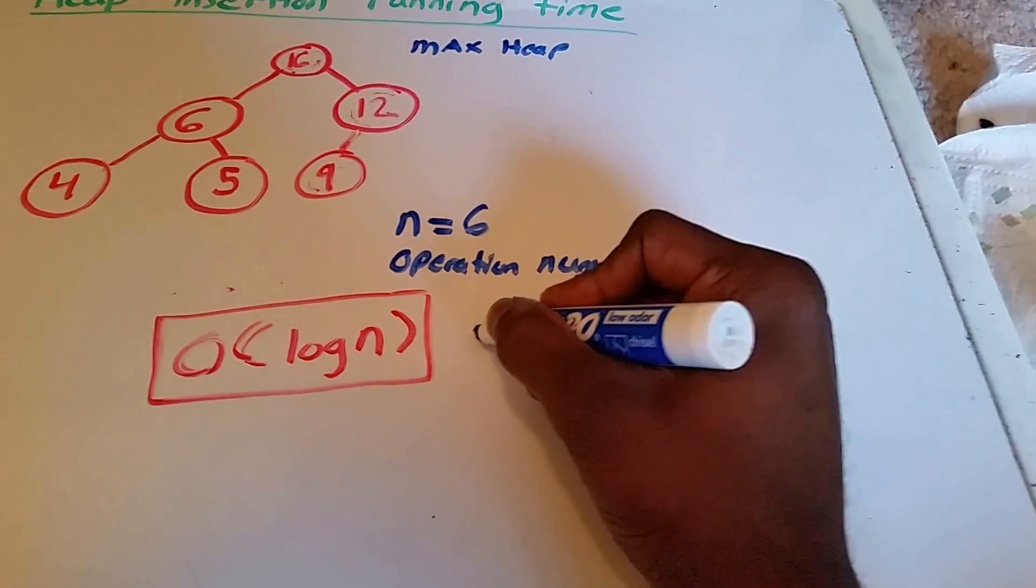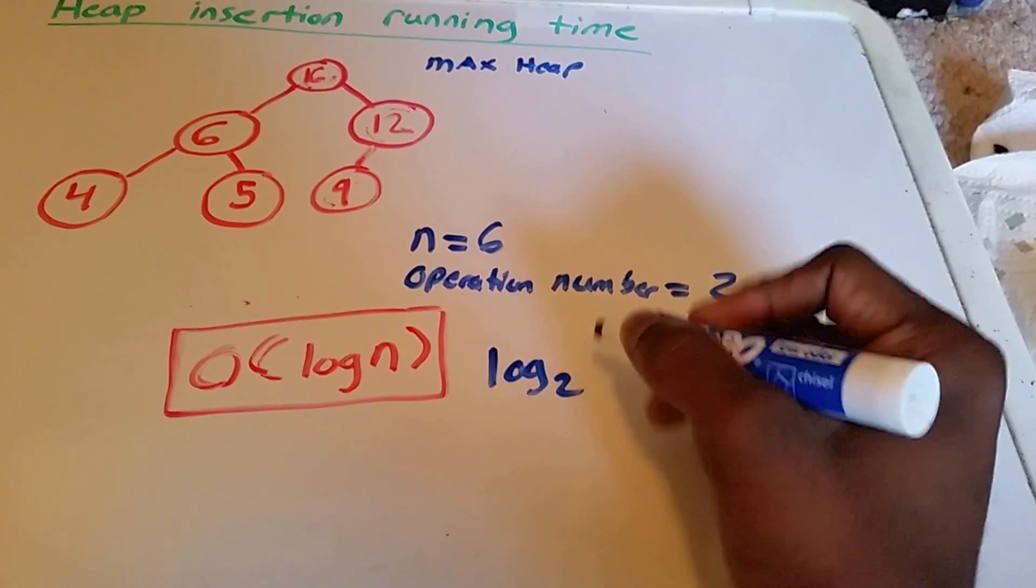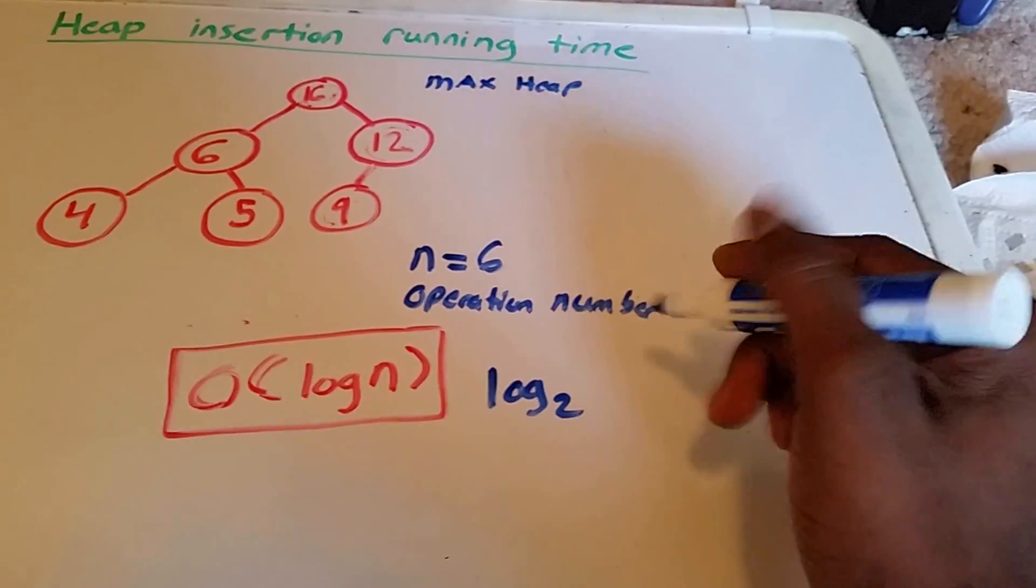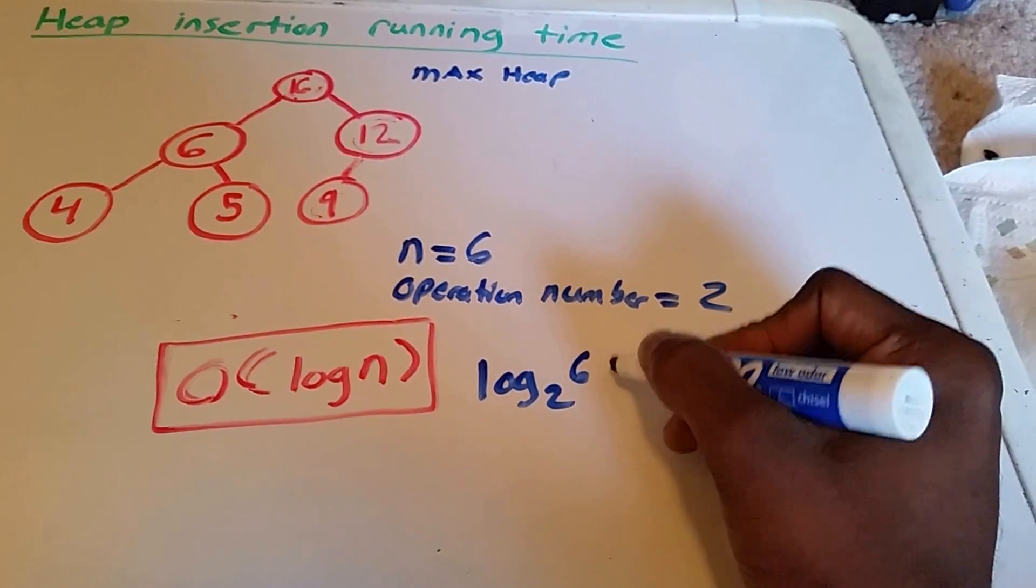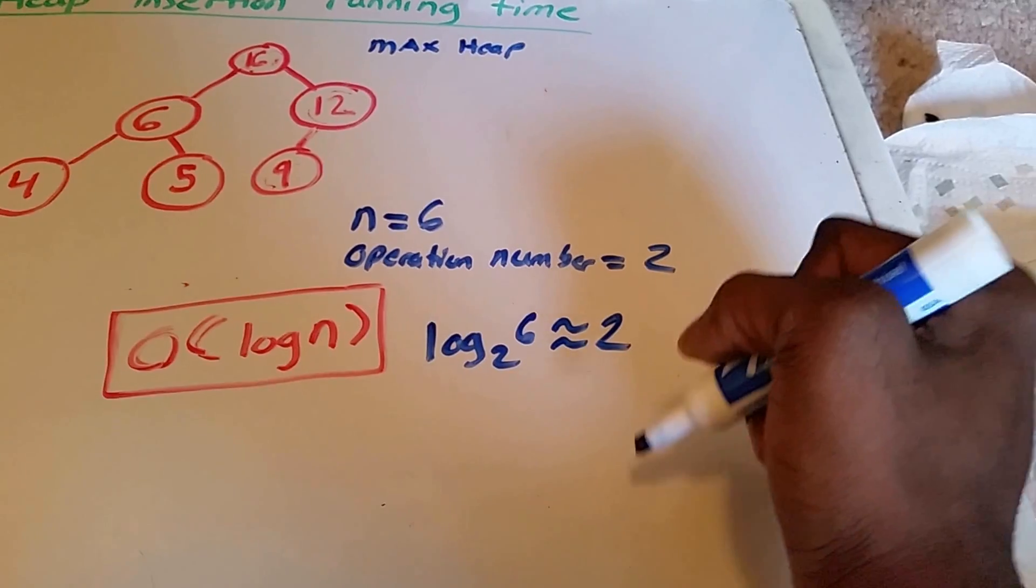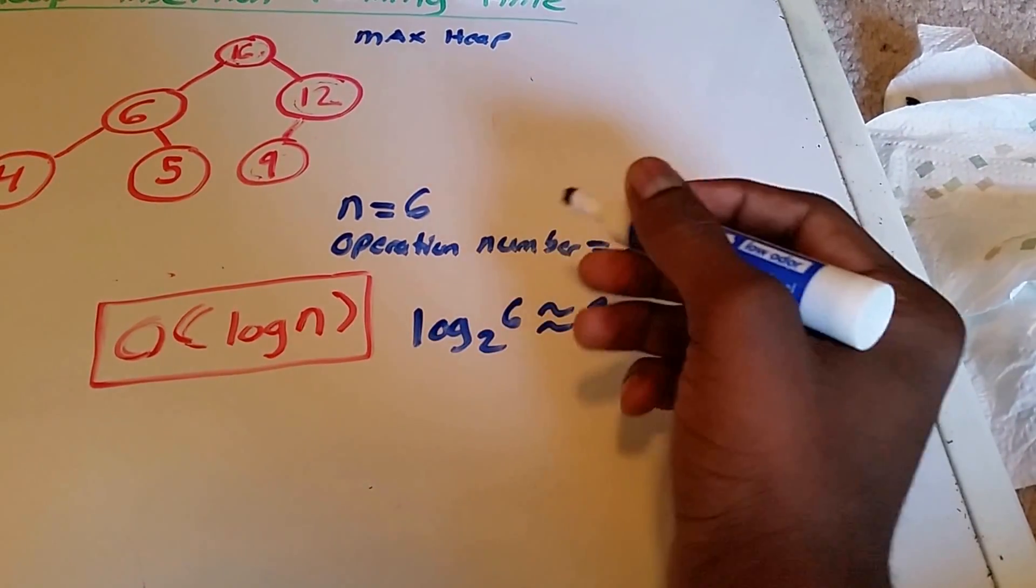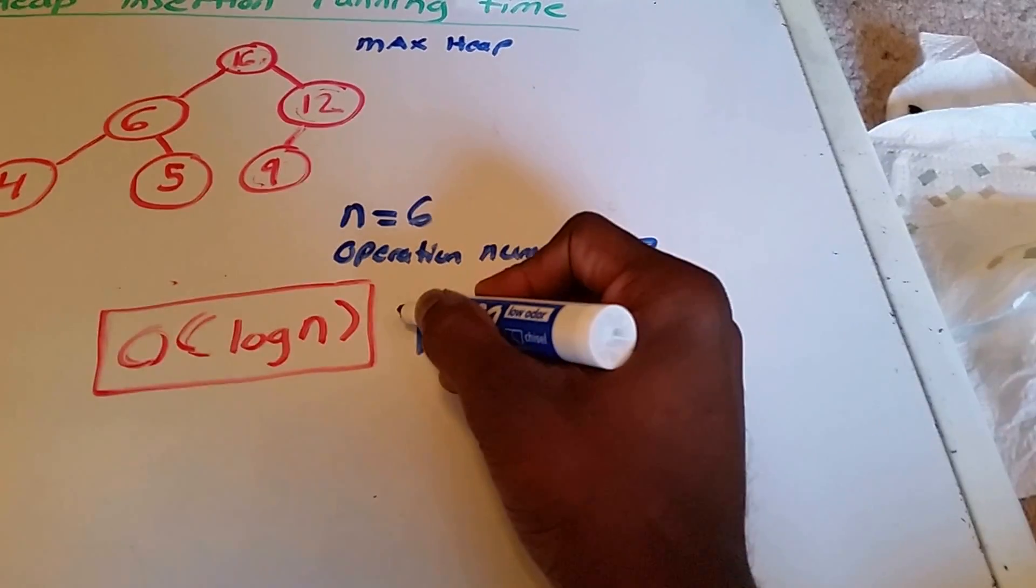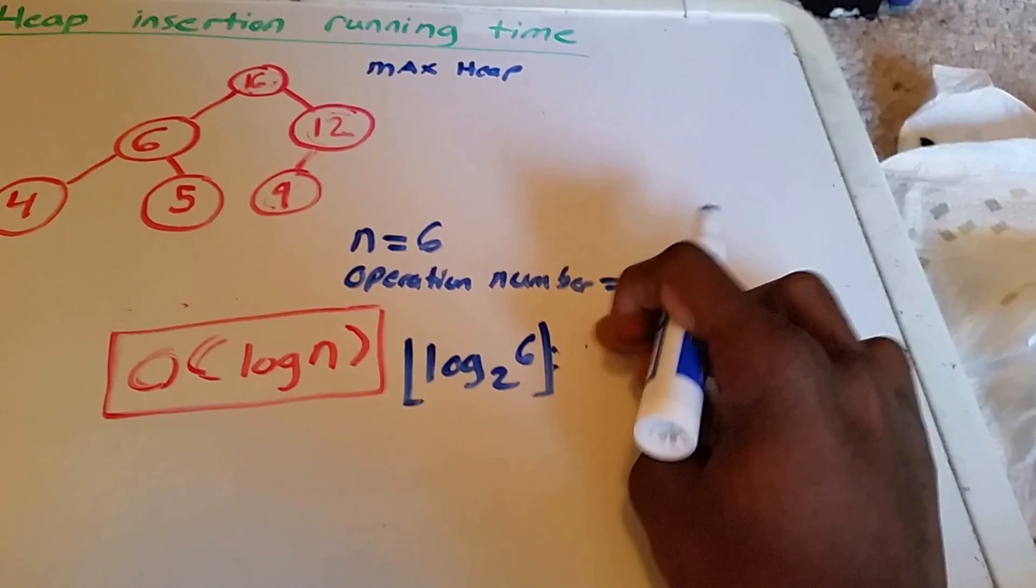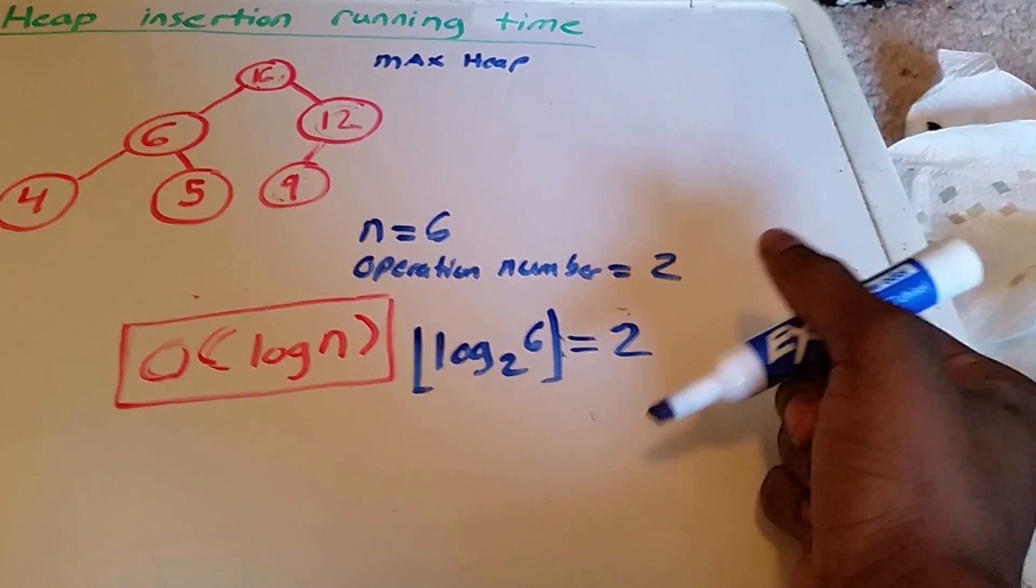So what we can see is that the number of operations it took was log base 2 of size n. In this case, our size n is 6, which is about 2. So more specifically, we would have to round down. And now we get exactly 2. So it only takes 2 operations.